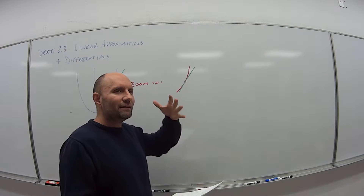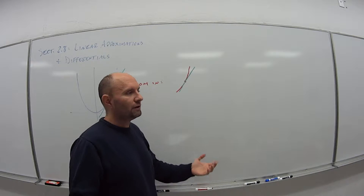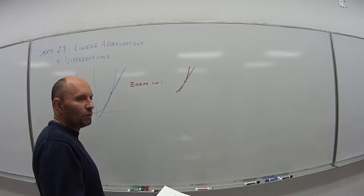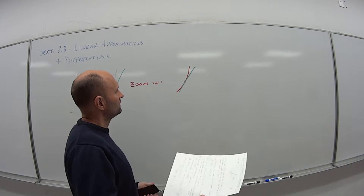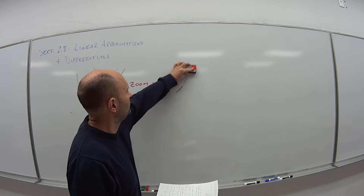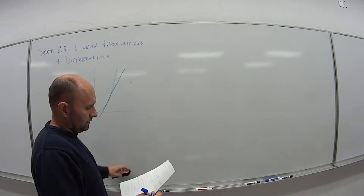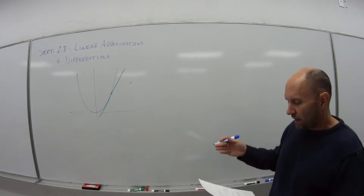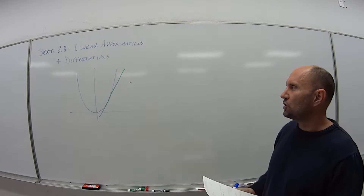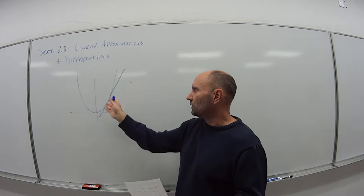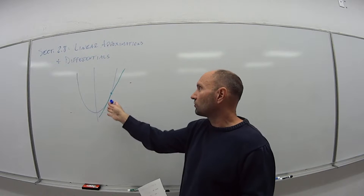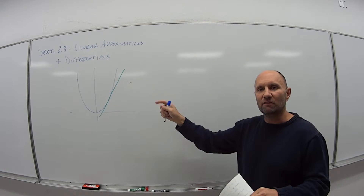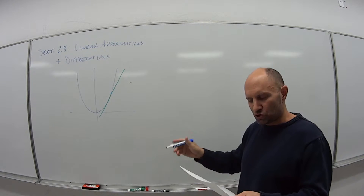That's what we're doing in this section — taking some function, could be a complicated function, and just converting it into a line at that point, which is a lot easier to figure out a value of a line instead of some complicated function. If I can find the equation of the tangent line, then that gives me a linear approximation of that equation. So even though my equation might be y = x², at that point with that tangent line, that little piece is basically giving me the same value, or a very good approximation at that point.